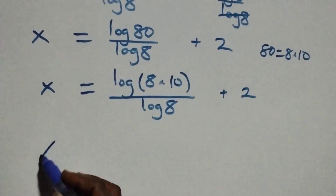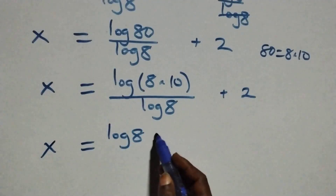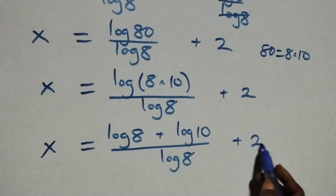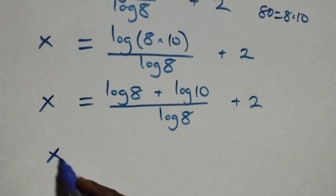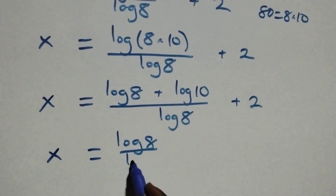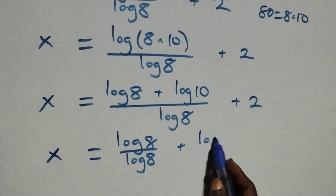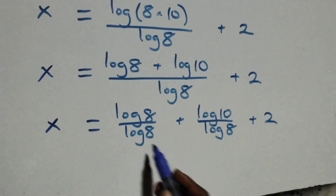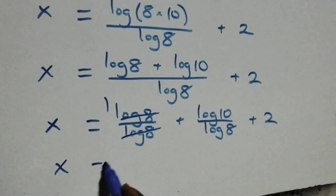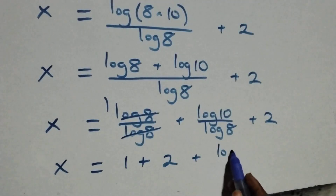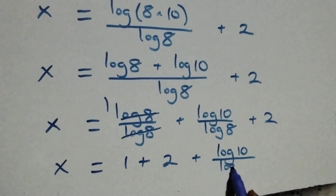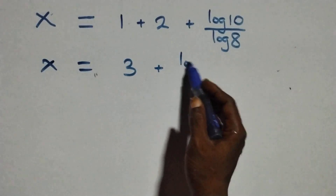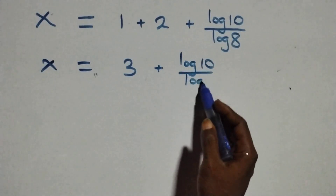This also follows the log product rule, and we have x equals log 8 plus log 10 over log 8 plus 2. Then we separate this: x equals log 8 over log 8 plus log 10 over log 8 plus 2. Log 8 over log 8 cancels to give 1, so this becomes x equals 1 plus 2 plus log 10 over log 8, which is x equals 3 plus log 10 over log 8.